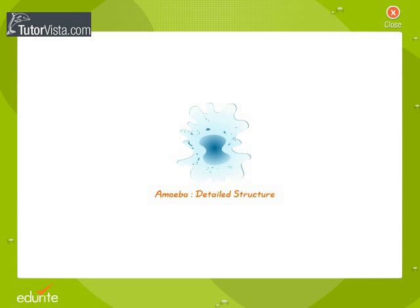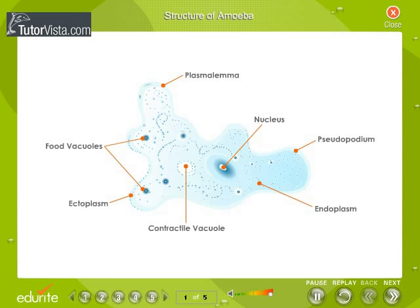Amoeba Detailed Structure. Observe carefully the detailed structure of amoeba. Amoeba is a simple protozoan one-celled animal whose vital activities such as nutrition, excretion, locomotion, respiration and reproduction are completed in a single cell.